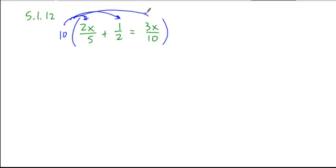So if we distribute 10 through to each of these, 5 goes into 10 2 times, so 2 times 2x, plus 2 goes into 10 5 times, so 5 times 1, equals 10 and 10 cancel, so we're left with just a 3x, and then we solve the resulting equation.